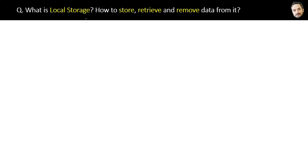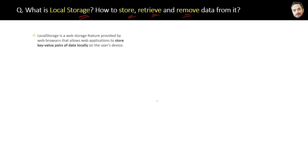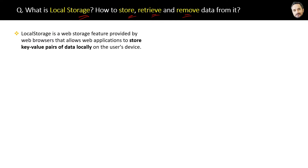What is local storage? How to store, retrieve, and remove data from it? Let's see the definition first. Local storage is a web storage feature provided by browsers that allows web applications to store key-value pairs of data locally on the user's device.